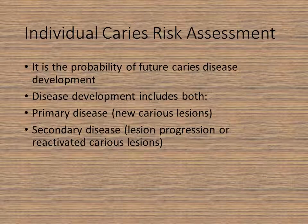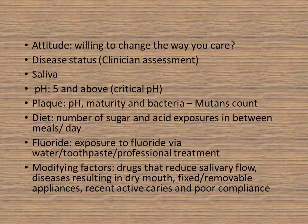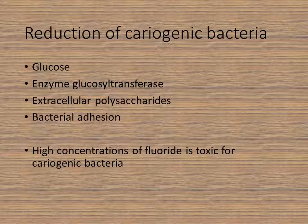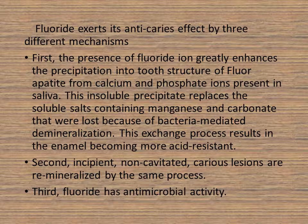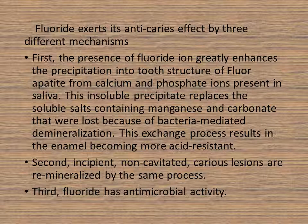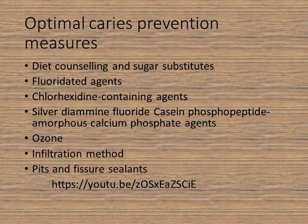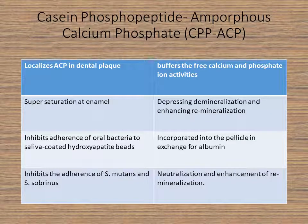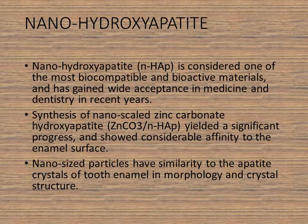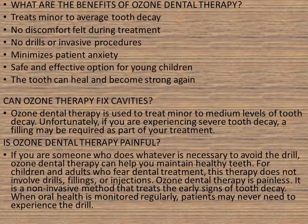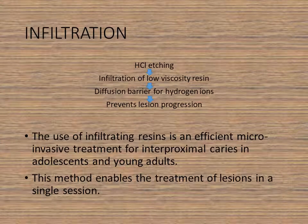Coming to prevention, we discussed caries risk assessment, the patient's attitude and how it needs to be changed, diet counseling, and fluoride exposure. We talked about how fluoride works — its formation, antibacterial activity, and capability to remineralize incipient caries lesions. After that, we discussed caries prevention measures including GC's Tooth Mousse, nano-hydroxyapatite (NovMin), and concluded with a discussion on ozone.